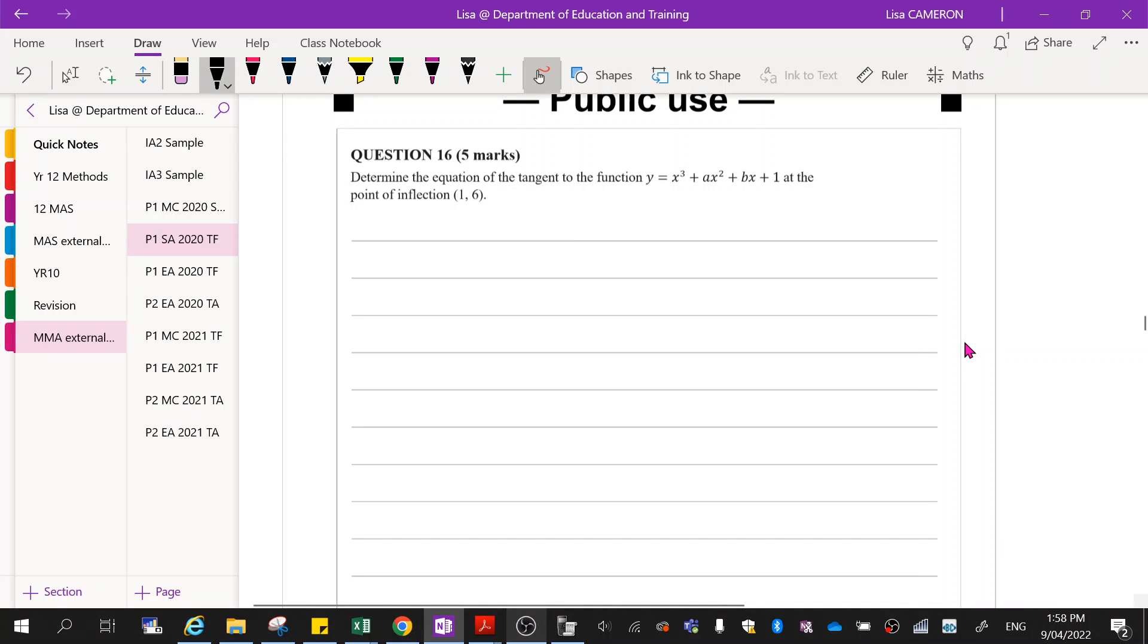Okay, question 16. Determine the equation of the tangent to this function at the point of inflection (1, 6). If it's a point of inflection, then that means that the second derivative is equal to 0.